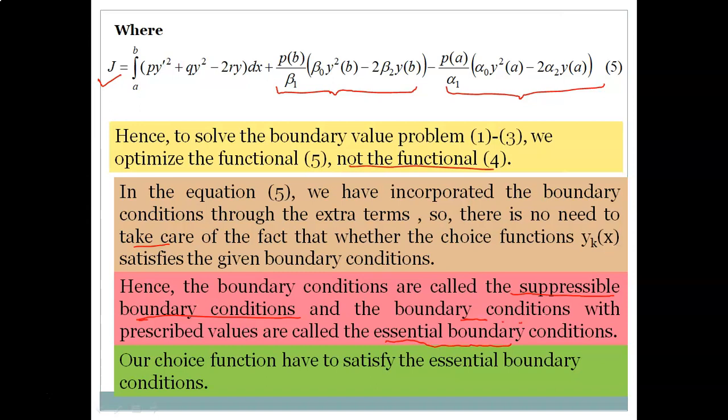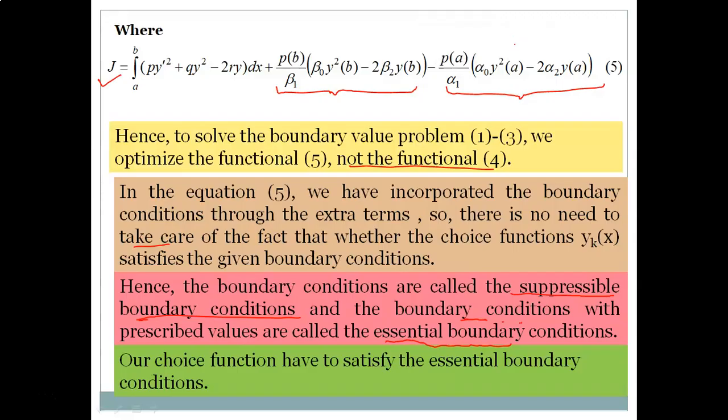Our choice function must satisfy the essential boundary conditions but need not satisfy the suppressible ones. One important special case: if β₁ = 0 in equation 3, the term involving p(b) in functional J (equation 5) must be dropped, because that coefficient becomes infinite. Similarly, if α₁ = 0, the corresponding term with p(a) is dropped.